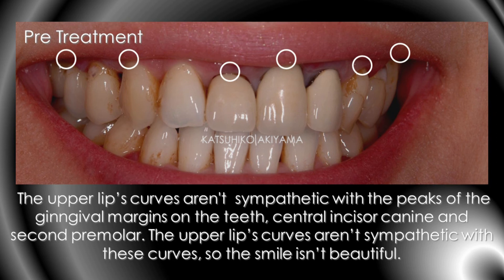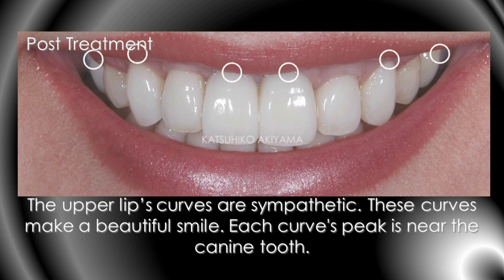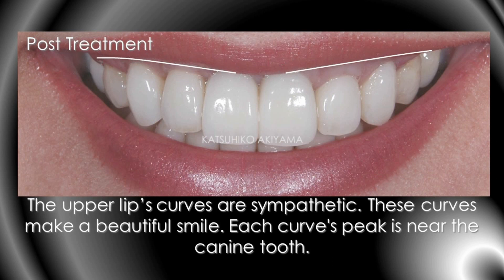This is the pre-treatment situation. The upper lip's curves aren't sympathetic with the peaks of the gingiva margin on the teeth — central incisor, canine, and second premolar — so the smile isn't beautiful. Post-treatment, this is my treatment result: the upper lip's curves are once again sympathetic, and these curves make a beautiful smile.